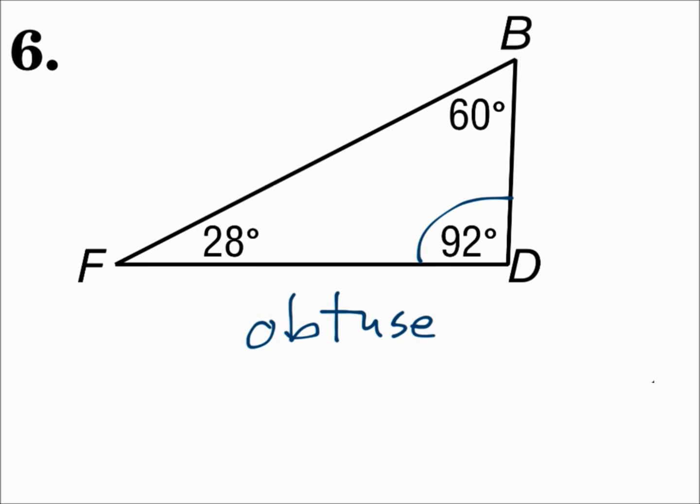Remember: if all angles are acute, then it's acute. If all angles are congruent, then it's equiangular and acute, and that congruent measure is going to be 60 degrees. If it has one obtuse angle, it's an obtuse triangle, and if it has one right angle, then it's a right triangle.